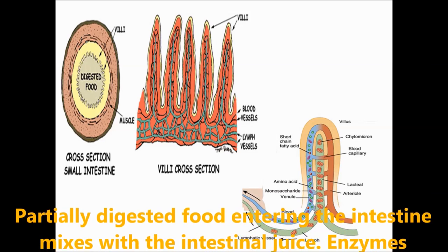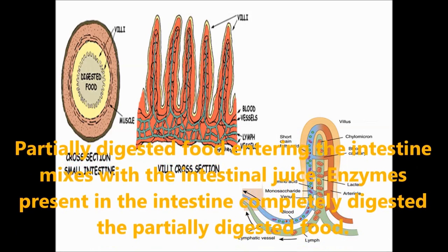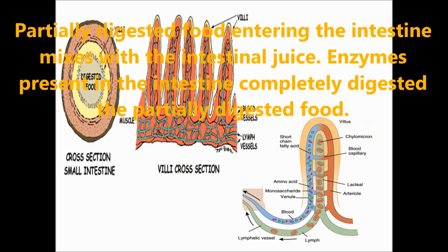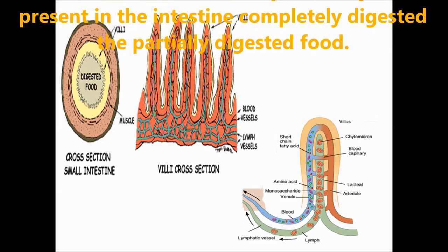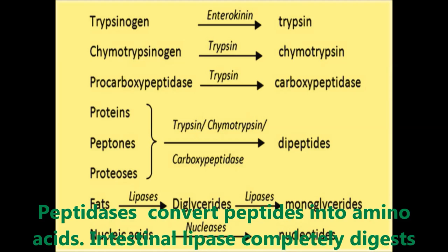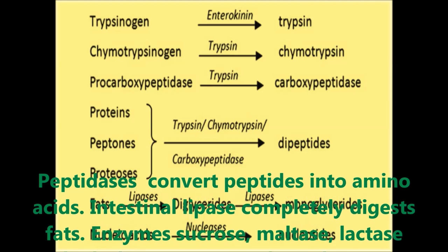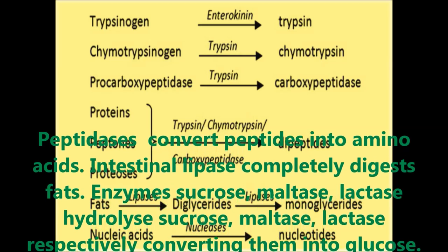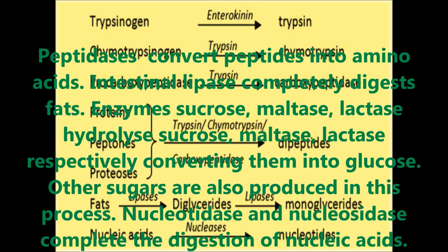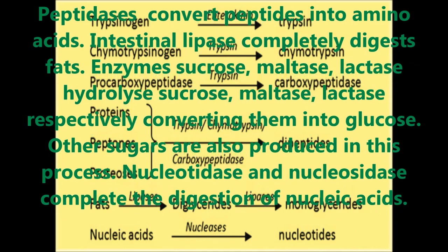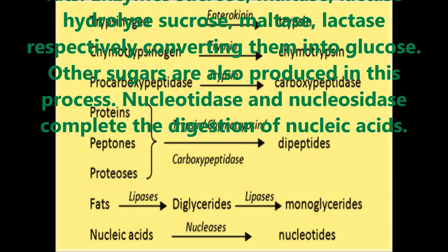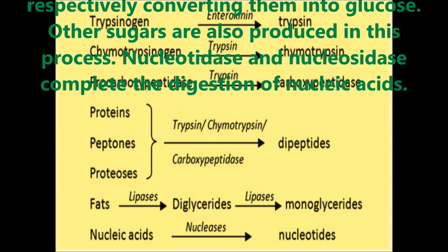Here, partially digested food entering the intestines mixes with intestinal juice. The enzymes present in the intestine completely digest the partially digested food. Peptidase converts peptides — partially digested products of proteins — into amino acids. Intestinal lipase completely digests the fat. Enzymes such as sucrase, maltase and lactase hydrolyze their respective sugars, converting them into glucose and other sugars. Nucleotidase and nucleosidase complete the digestion of nucleic acids.